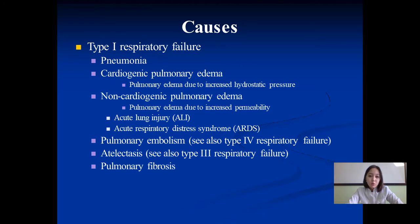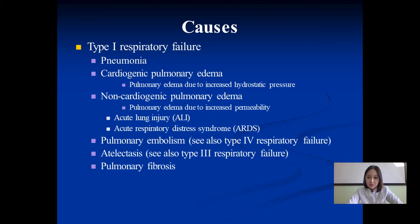Causes of Type 1 respiratory failure include pneumonia, cardiogenic pulmonary edema (due to increased hydrostatic pressure), non-cardiogenic pulmonary edema (due to increased permeability), acute lung injury, acute respiratory distress syndrome, pulmonary embolism, atelectasis, and pulmonary fibrosis.